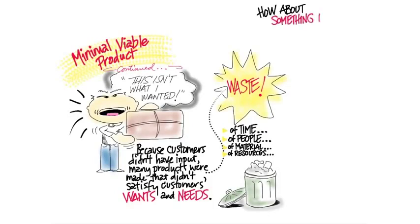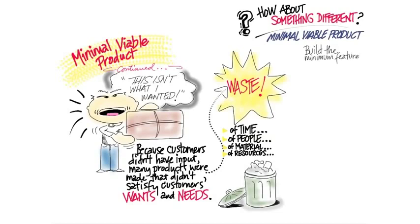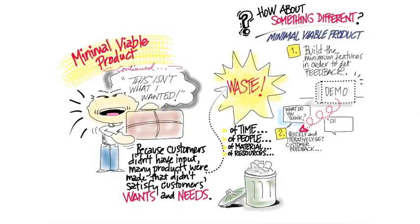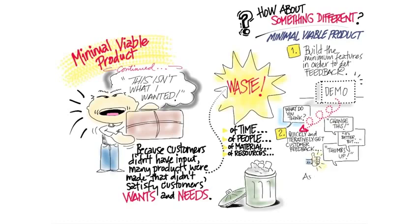So why don't we just figure out how to build the minimum viable product — the minimum features in order to get feedback. Now, feedback could take the form of verbal input, early orders, or anything valuable in helping you come to closure on what should we be building and in what order.